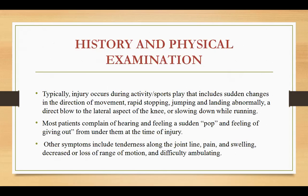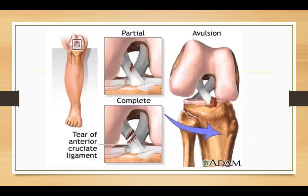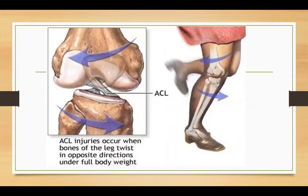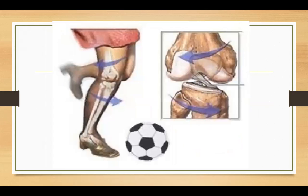In history and physical examination, there is typically a history of sporting activity or trauma to the joint. Most patients complain of hearing and feeling a sudden pop and a feeling of giving way. Other symptoms include pain, swelling, tenderness, and loss of range of motion with difficulty walking. ACL injuries occur due to twisting of the bones in opposite directions, and in this image you can see how football players are affected.